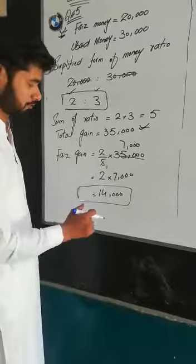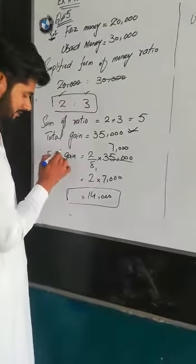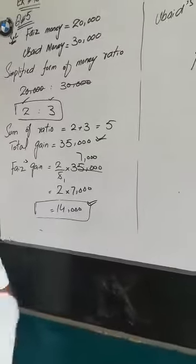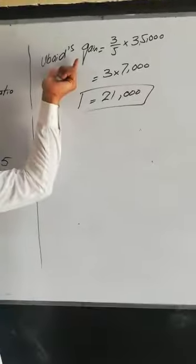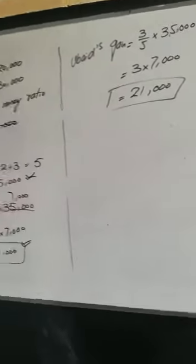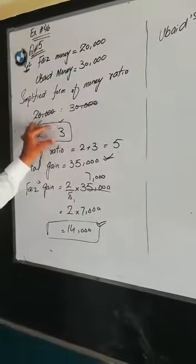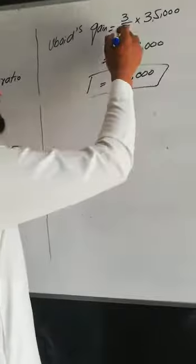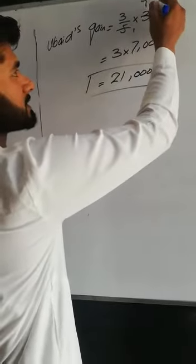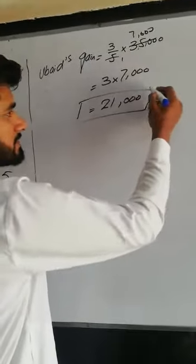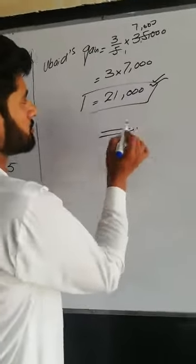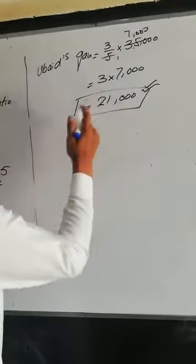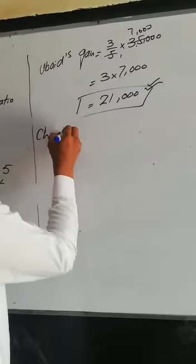Faiz's gain equals 14,000 rupees from the total of 35,000. Now Ubaid's gain: Ubaid's ratio is 3, so it is 3 out of 5 multiplied by 35,000, which equals 21,000 rupees. This is Ubaid's share.